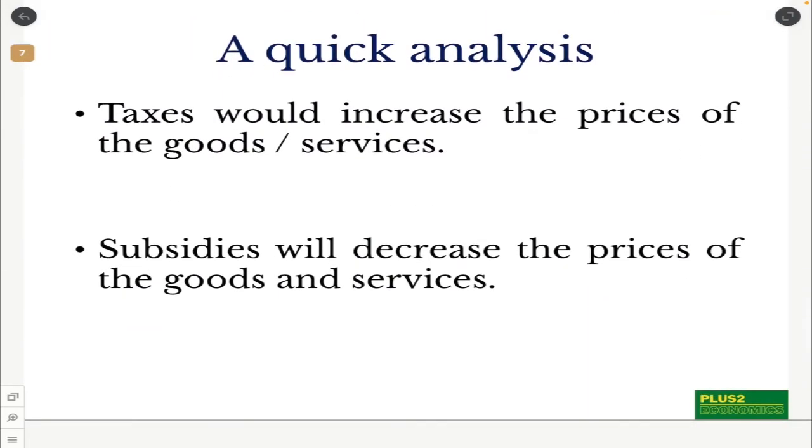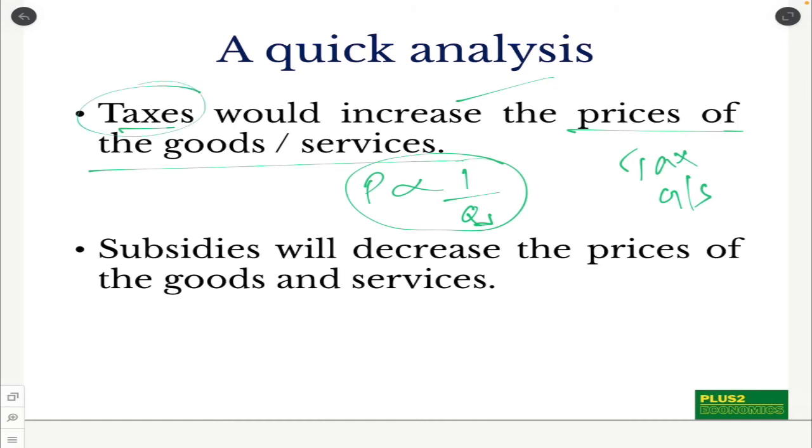Let us have a quick analysis. Taxes would increase the prices of goods and services. Always remember this. Whenever tax is levied either on a good or a service, the prices, the final prices of it increases. And there is a good chance the demand might also decrease because we know that price is inversely proportional to the quantity demanded. So what happens when price increases, quantity demanded decreases. So if government wants to discourage the usage of something, government might even increase the taxes on it. For example, cigarettes. Government doesn't want people to smoke because it is hazardous to health. So government keeps increasing the tax on cigarettes and alcohols and alcohol drinks and other things. So when taxes are levied on a good or a service, the demand might reduce because the price increases.